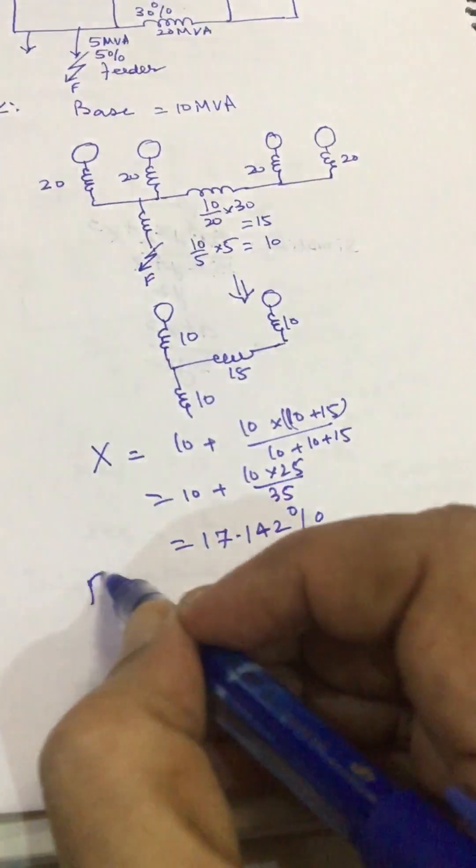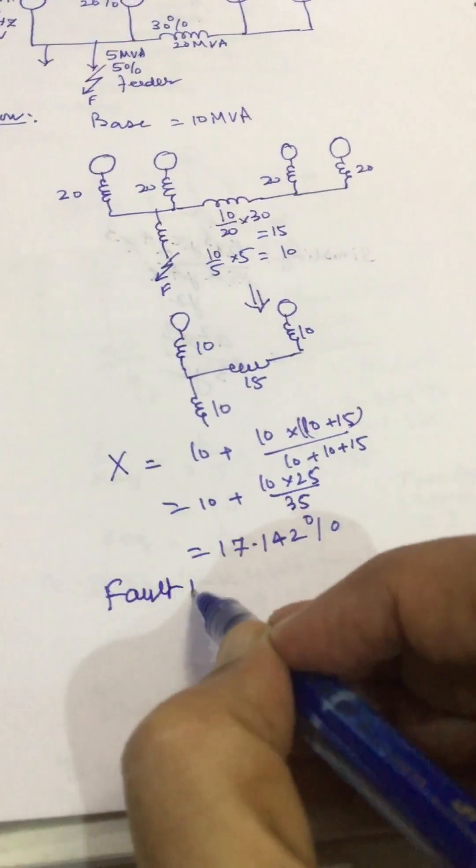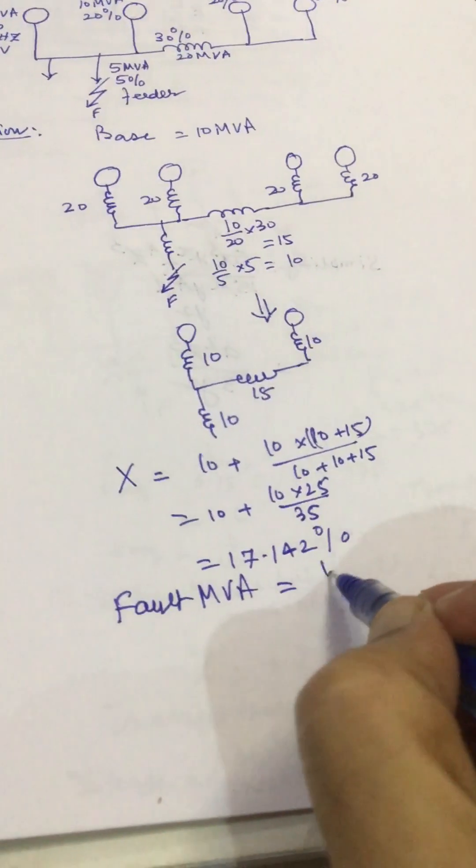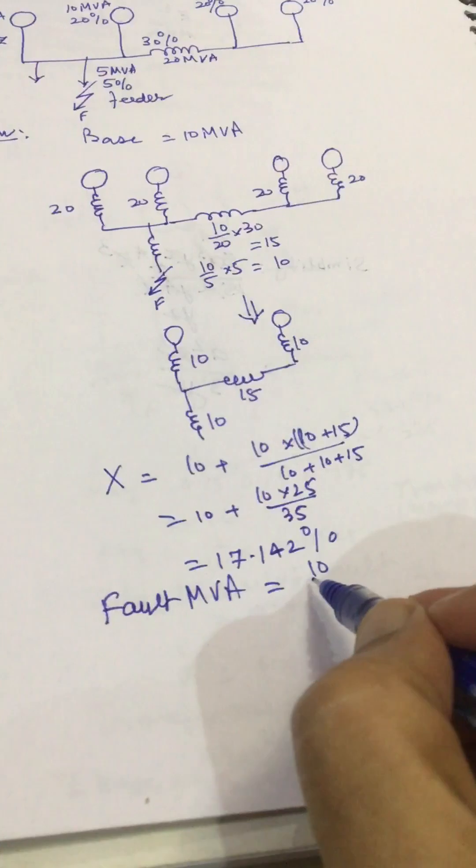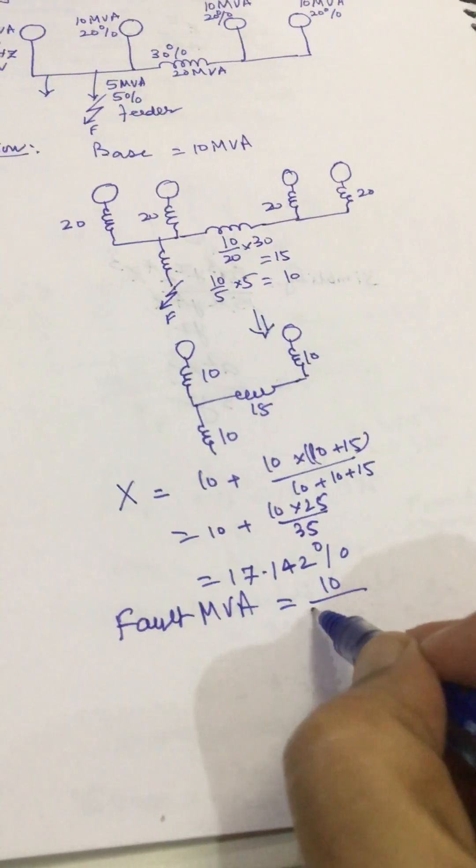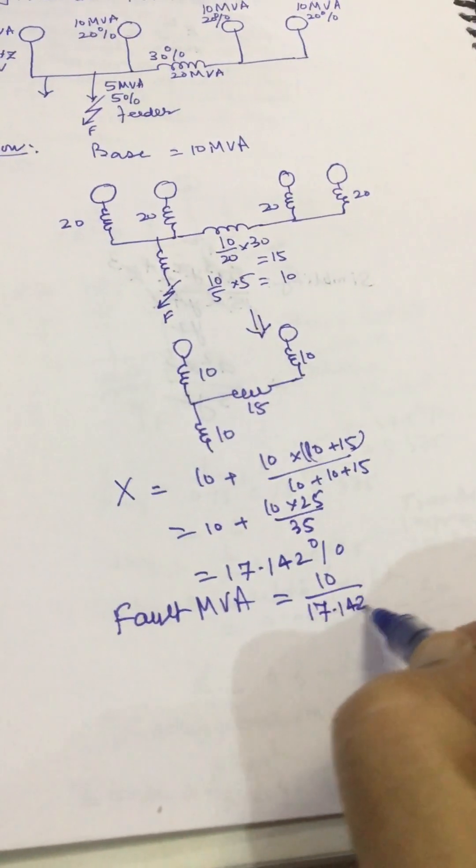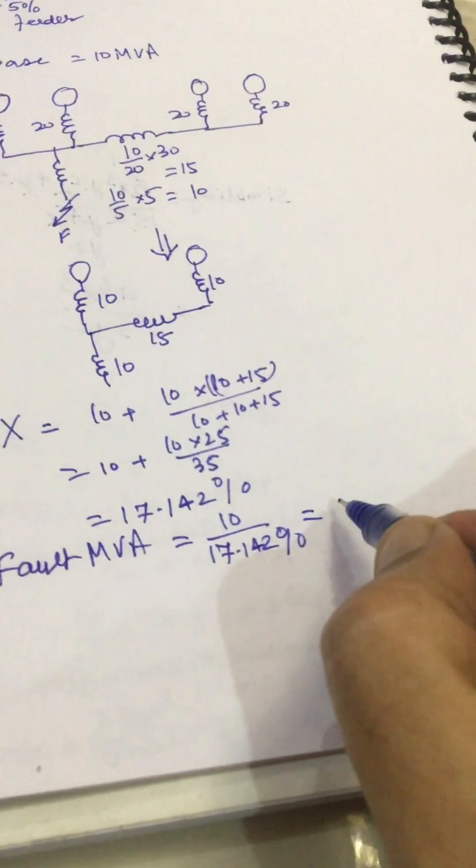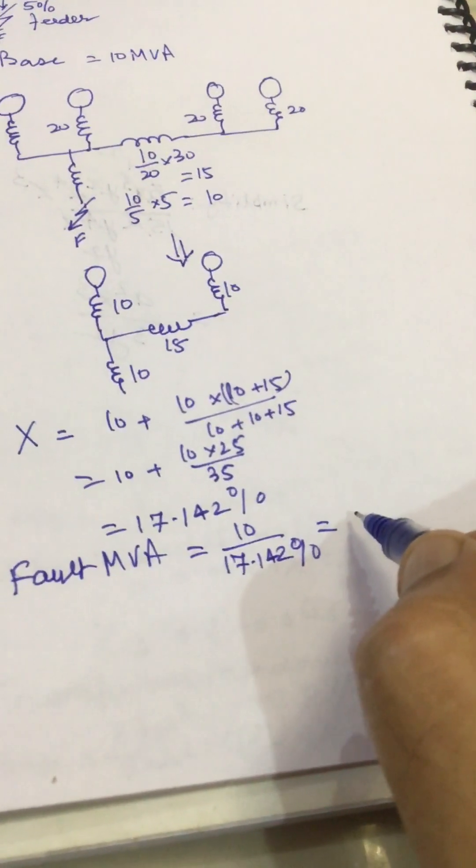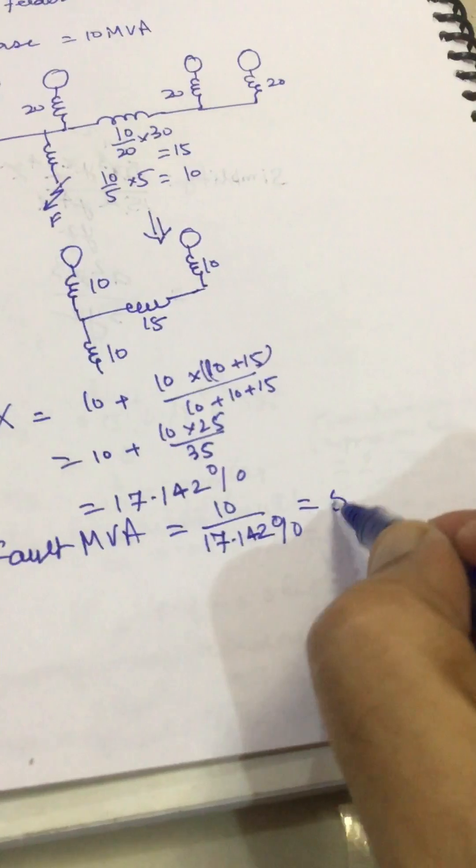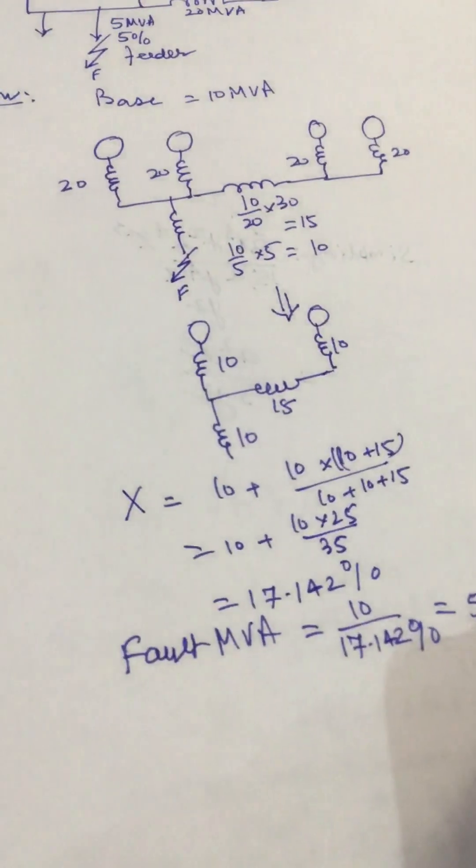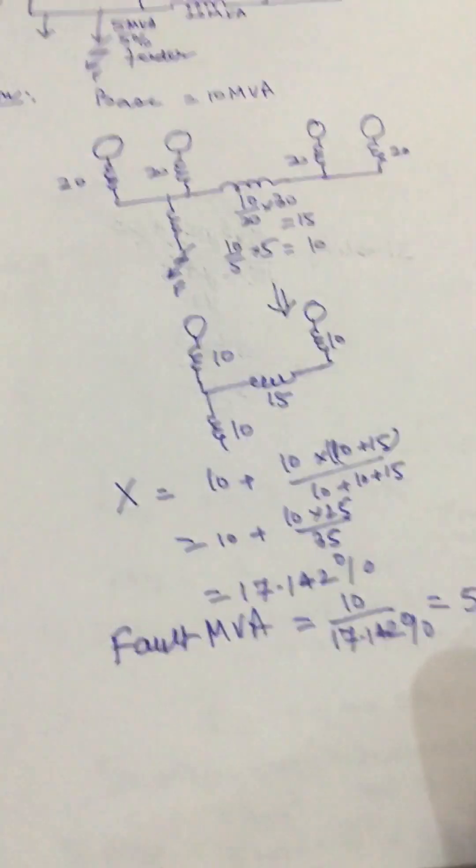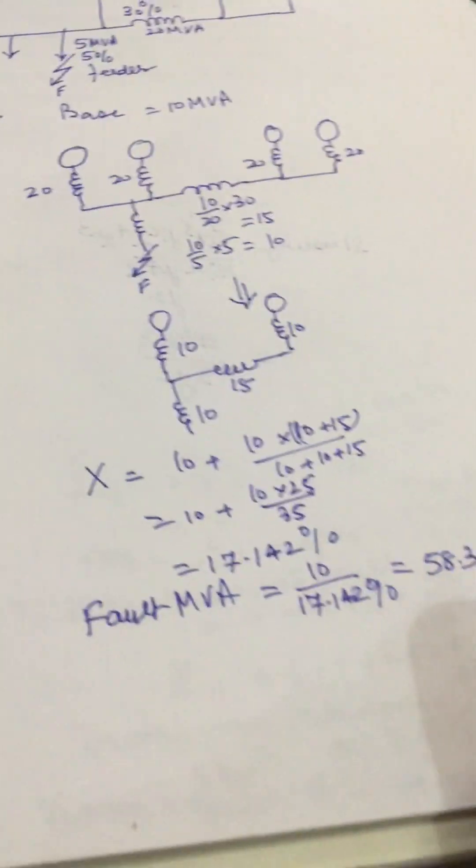Fault MVA we can find out: base MVA that is 10 divided by 17.142 percent and from this we get this as 58.3362.